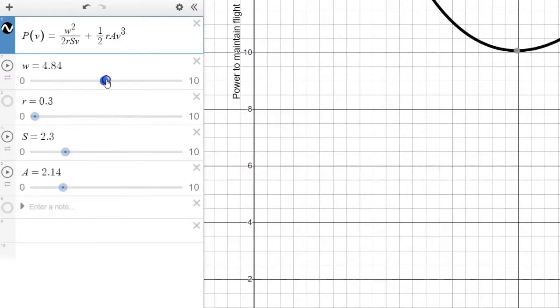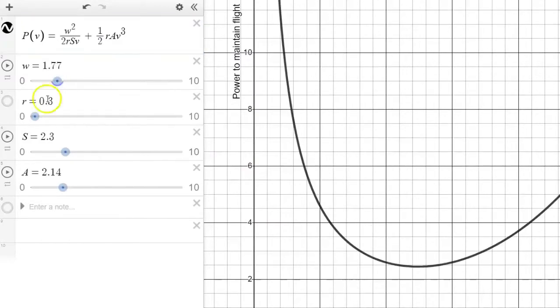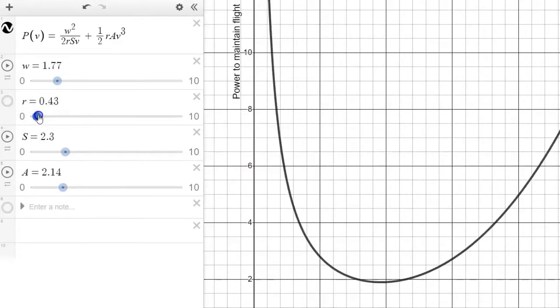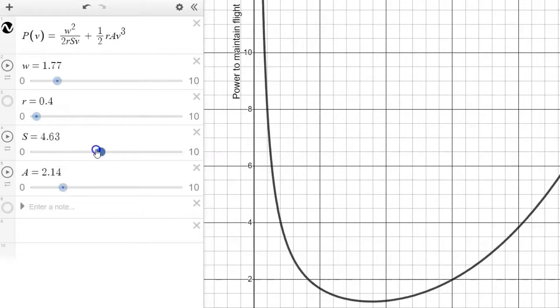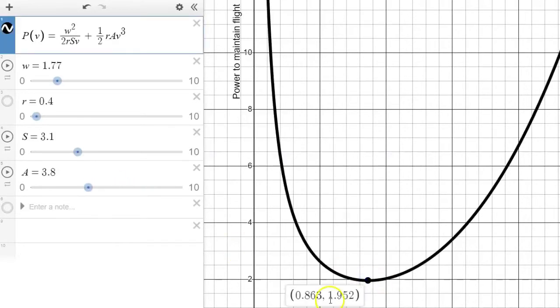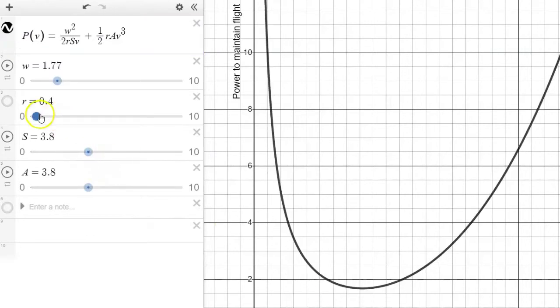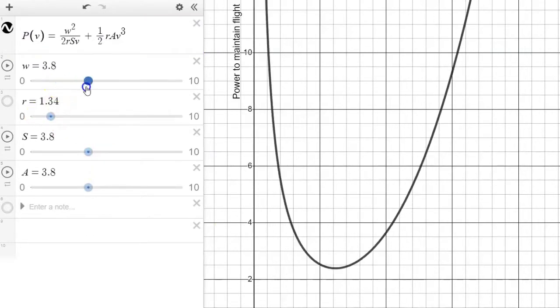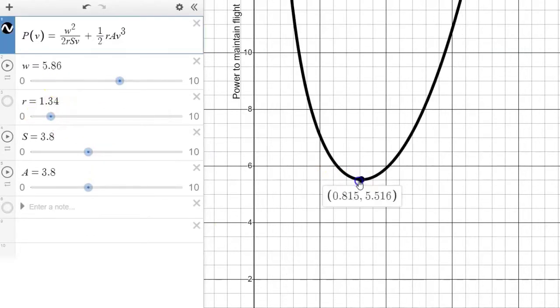Now we see that as these constants change, we always will see a minimum value, an optimal or most efficient method for this bird to maintain flight. And as I click on that, we see that there's always a relationship here. There's always a relative speed and then there's always a corresponding power to maintain flight no matter what values we give these constants. So the question at hand then is, what is the relationship? How do these numbers come from?